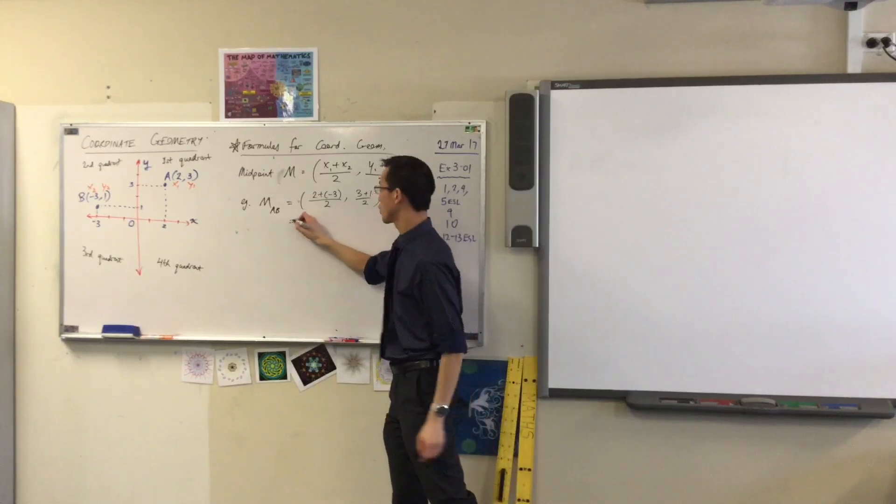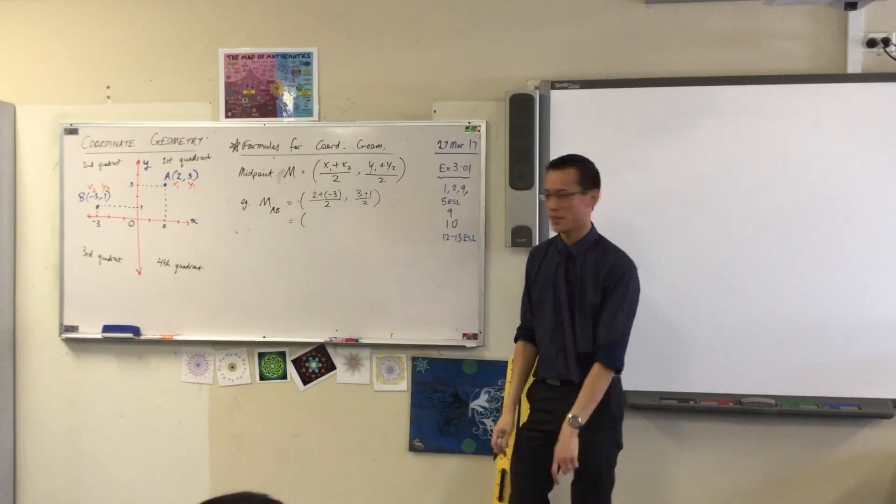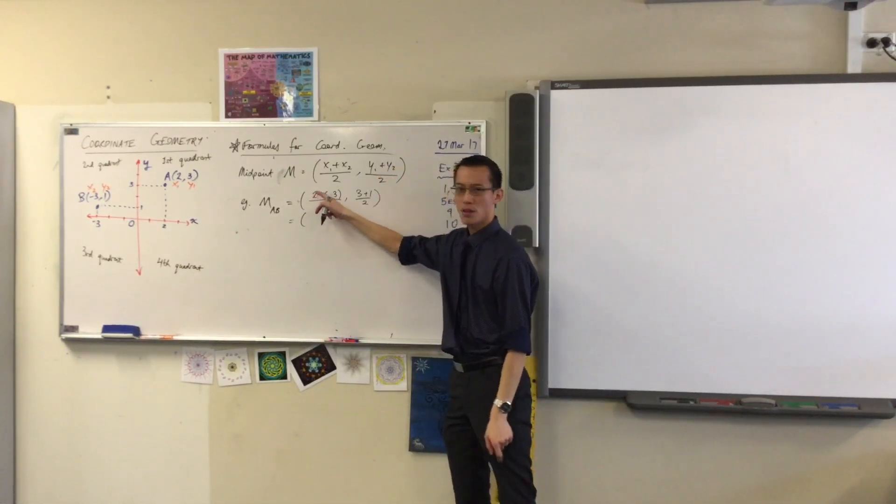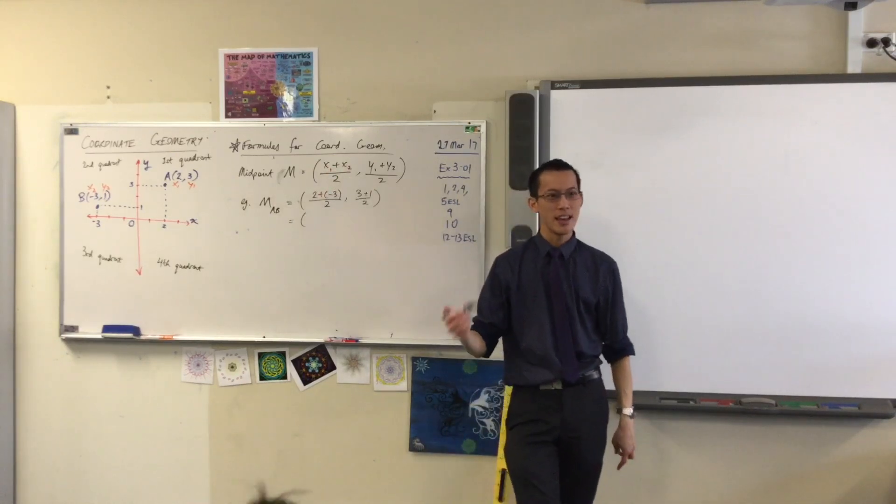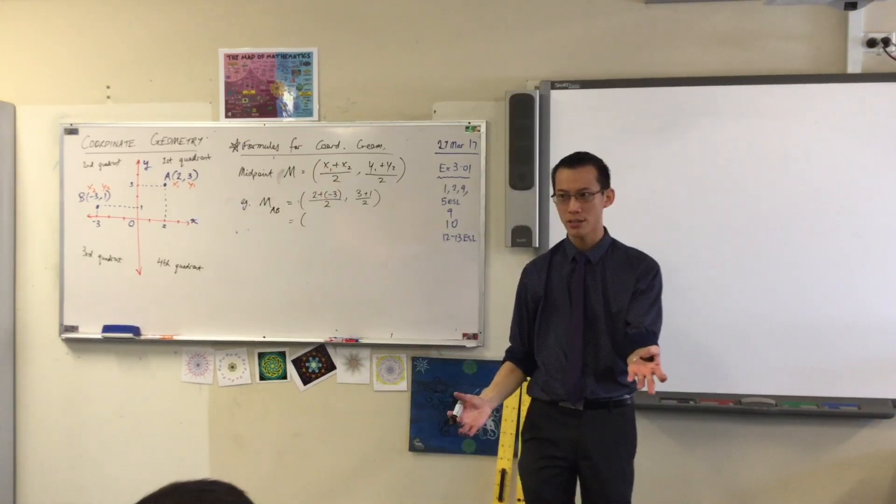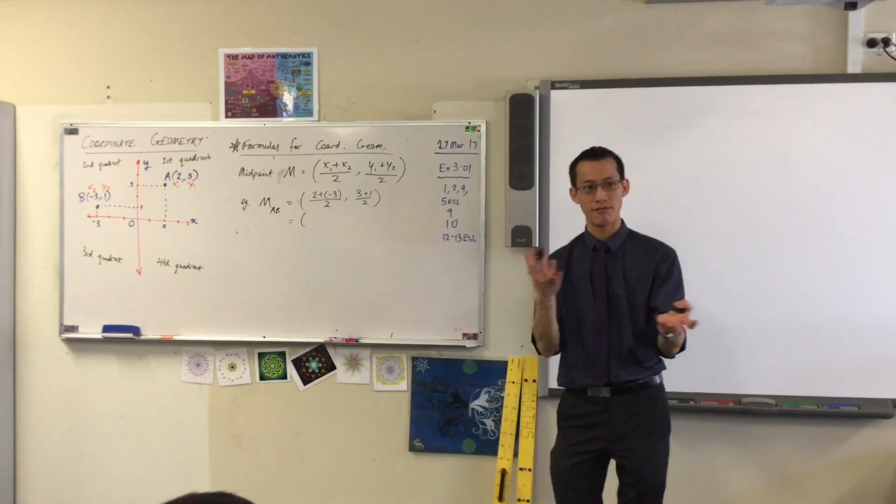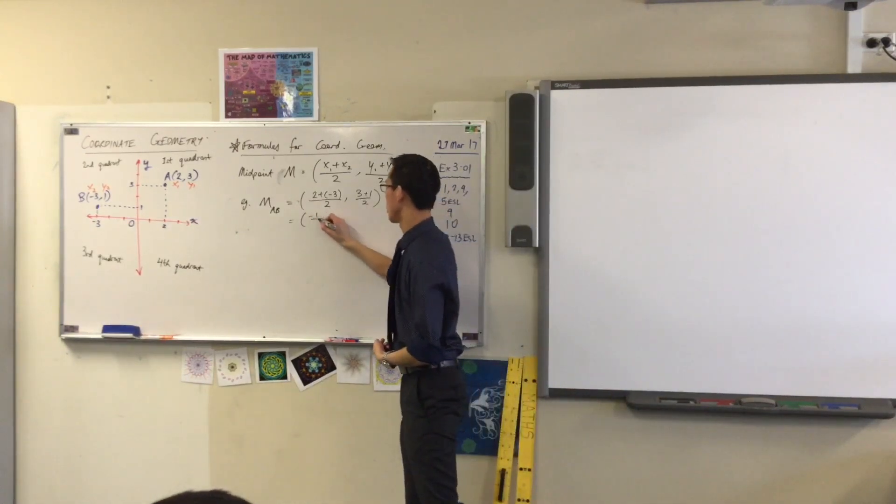Okay. I'm just going to quickly calculate this. I could go to my calculator, but these are pretty simple numbers that we started with. So 2 plus negative 3 is 2 minus 3. Yes? Yes. Which is negative 1. So this is just negative 1 over 2.